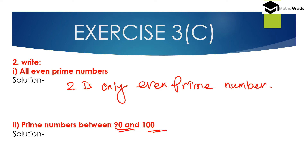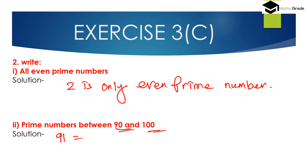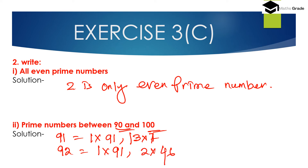91 is not a prime number because it has more than two factors: 1, 7, 13, and 91 (since 7 multiplied by 13 is 91). Then 92 is also not a prime number because 1 multiplied by 92 and 2 multiplied by 46 gives more than 2 factors. And 93 is also not a prime number because 1 and 93 and 3 multiplied by 31 give more than 2 factors.